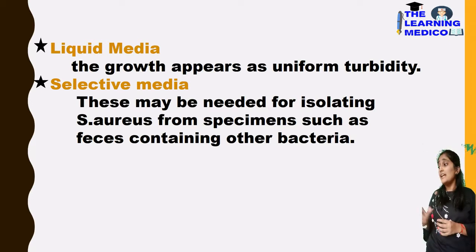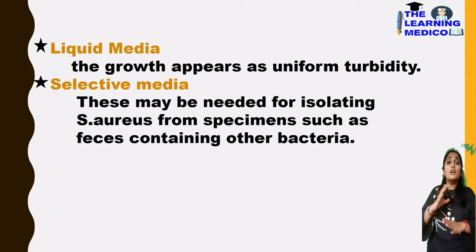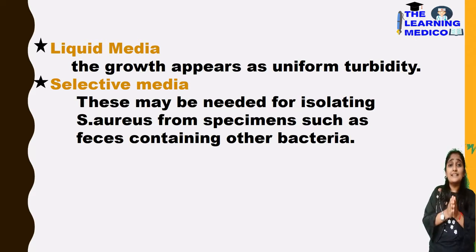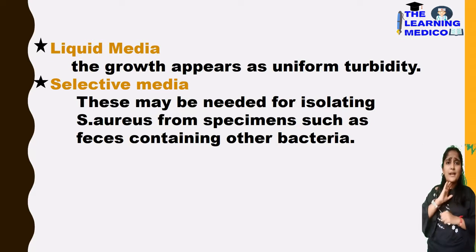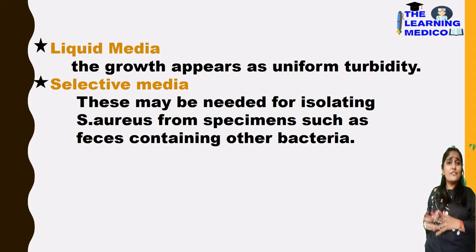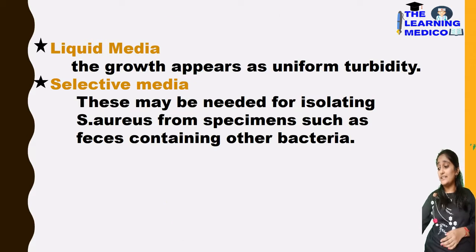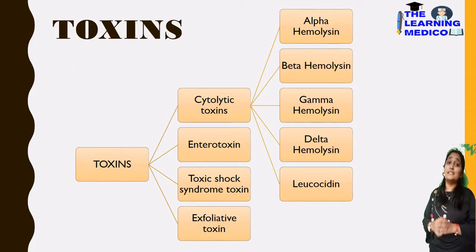In liquid medium, there is uniform turbidity. Liquid medium doesn't show proper morphology but is used when producing large quantities such as antibodies or vaccines. The selective medium is used for isolating Staphylococcus aureus from specimens such as feces, where other bacteria are also present. The selective medium inhibits other bacteria and stimulates the growth of Staphylococcus aureus.